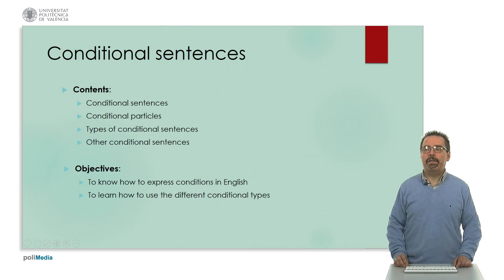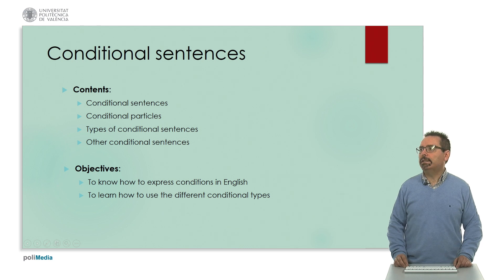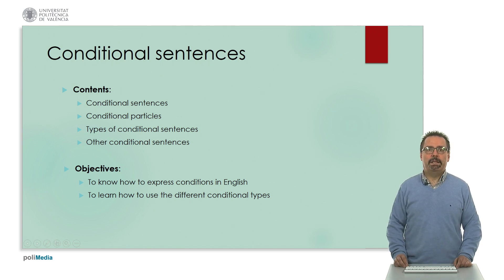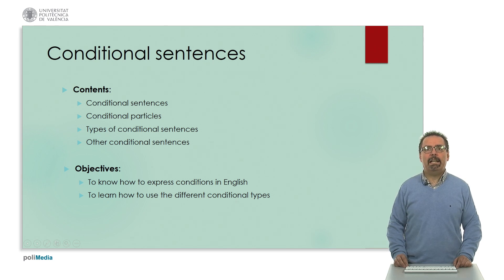These are the contents of the video. We will start with an explanation of what conditional sentences are, then follow with some conditional particles in English, later see some types of conditional sentences, and finish with other conditional possibilities. The objective is to know how to express conditions in English — something very important in technical English — and also to learn how to use the different conditional types.